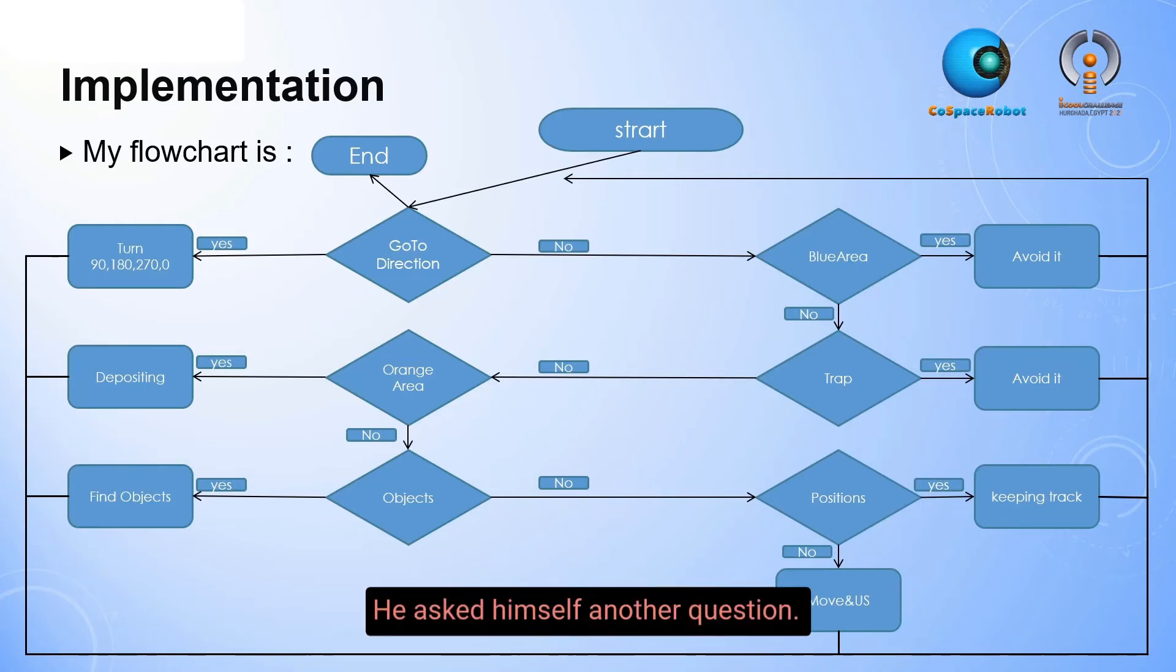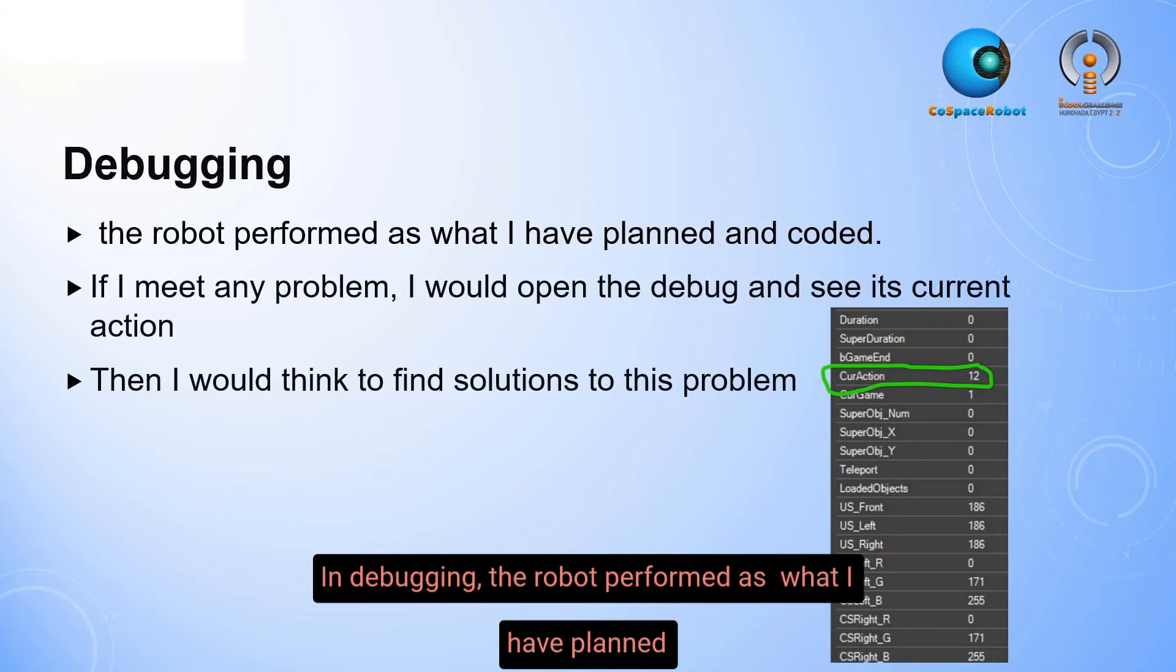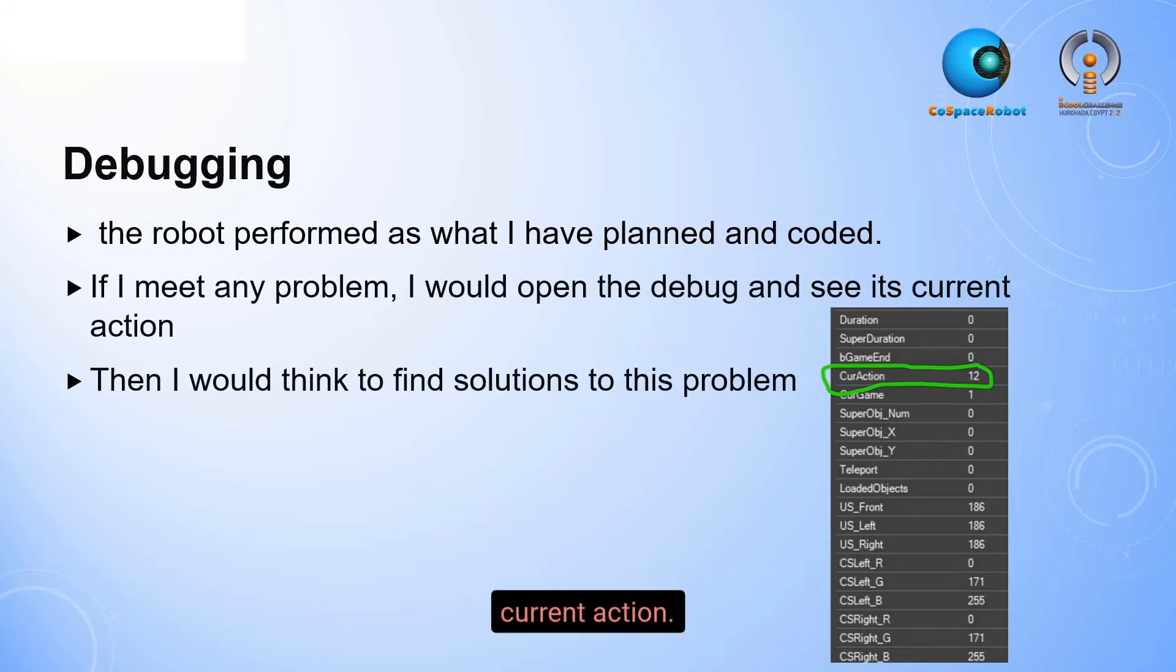In debugging, the robot performed as what I have planned and coded. If I meet any problems, I would open the debug and see its current action.